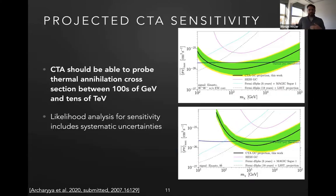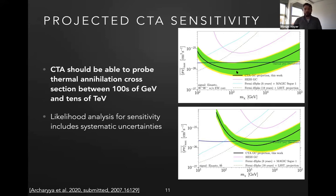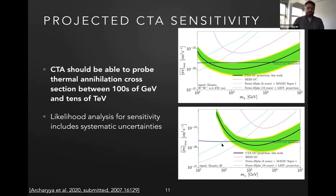We performed simulations of observations and did a full likelihood analysis also accounting for systematic uncertainties — essentially acknowledging that we haven't perfectly understood our instrumental response function. These black lines show the predicted sensitivity for the full galactic center survey. In purple are the limits from HESS for W+W-. You see an improvement of around an order of magnitude: CTA will probe the thermal relic cross-section between 200 GeV and maybe 20 TeV for this annihilation channel. And similarly for b-bbar, we will be able to probe part of the thermal relic cross-section. I think this is really promising.